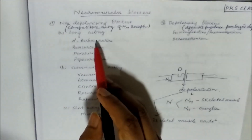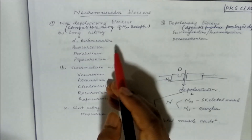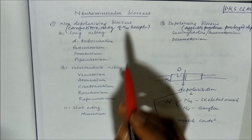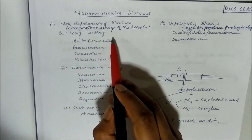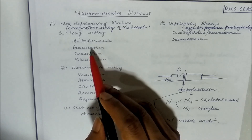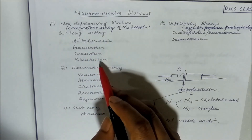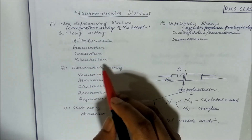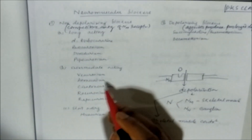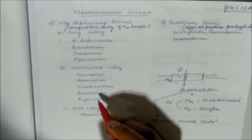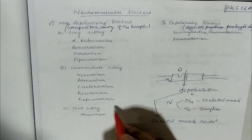Non-depolarizing blockers can be classified as long-acting, intermediate-acting, and short-acting. Long-acting neuromuscular blockers include D-tubocurarine, pancuronium, doxacuronium, and pipacuronium. Intermediate-acting blockers include vecuronium, atracurium, cisatracurium, rocuronium, and rapacuronium. Short-acting blockers include mivacuronium.